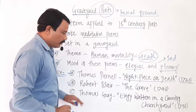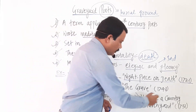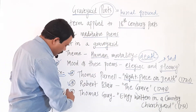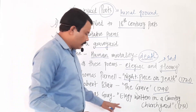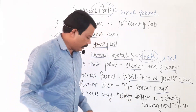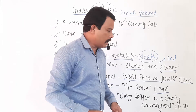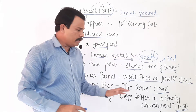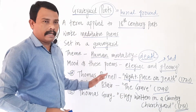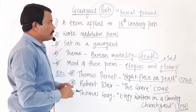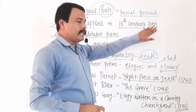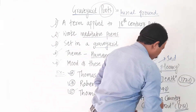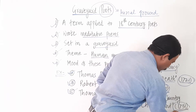The second example is Robert Blair's poem 'The Grave,' published in 1743. The third example is Thomas Gray's very famous poem 'Elegy Written in a Country Churchyard,' published in 1751. The term Graveyard Poets is applicable to only 18th century poets, as these dates — 1721, 1743, and 1751 — confirm.